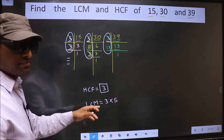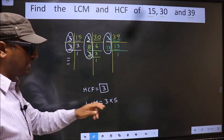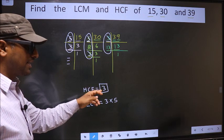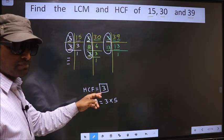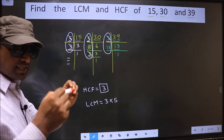For LCM, even if the number has appeared once or twice, still you will cut and write. Whereas HCF, the number should appear in all the 3 places. Understood the difference? Next.